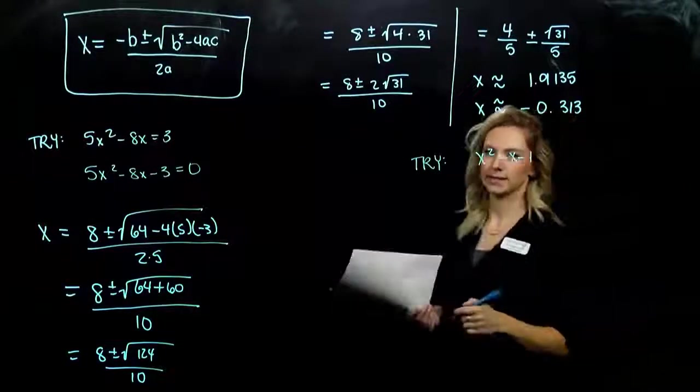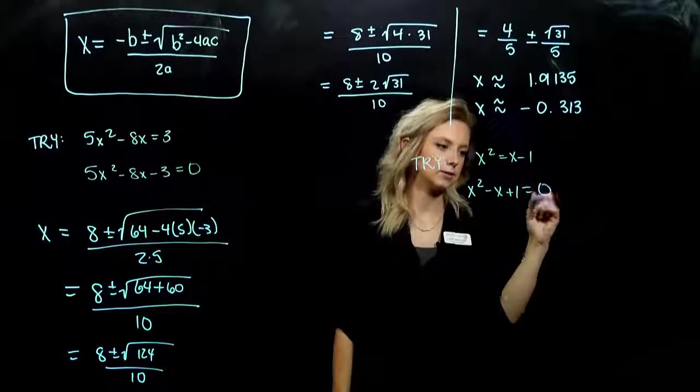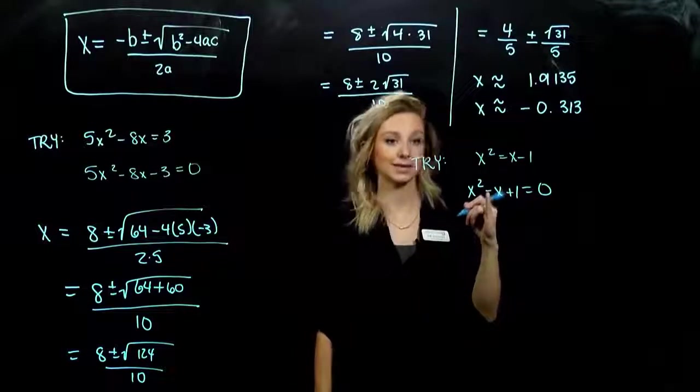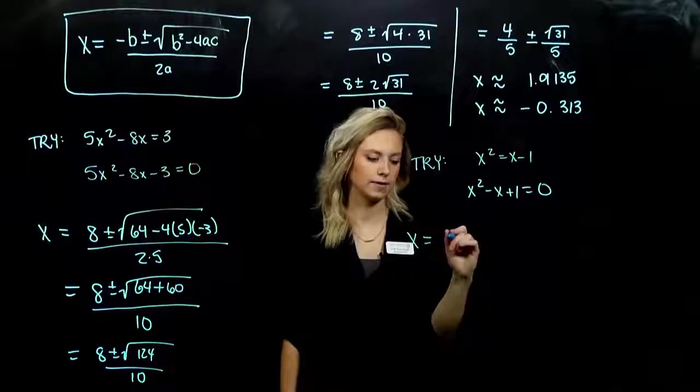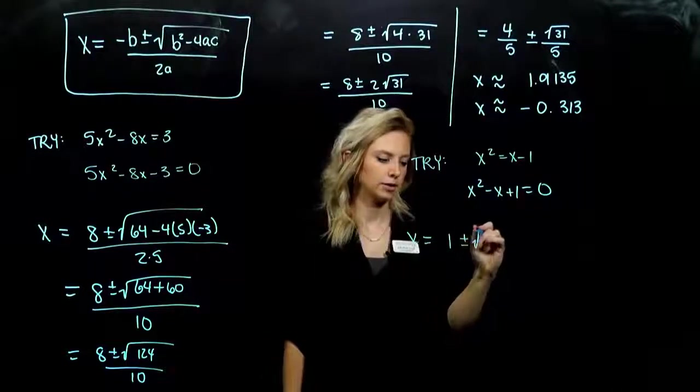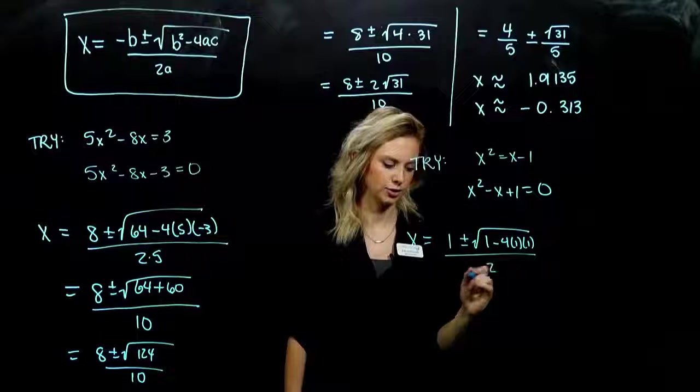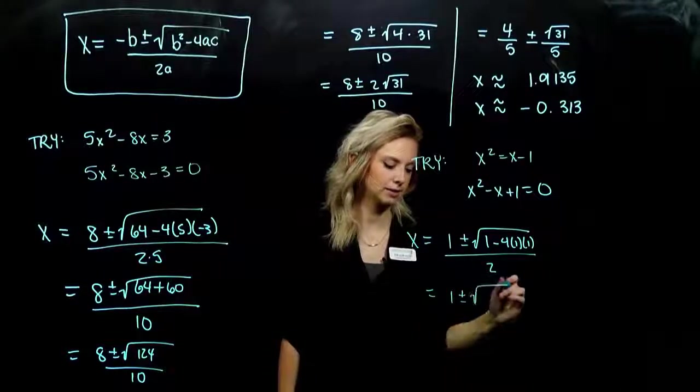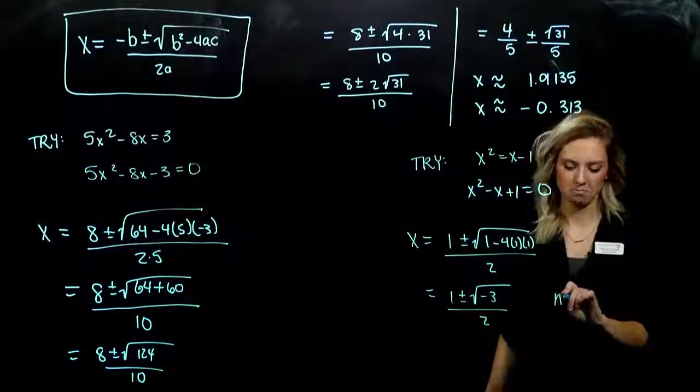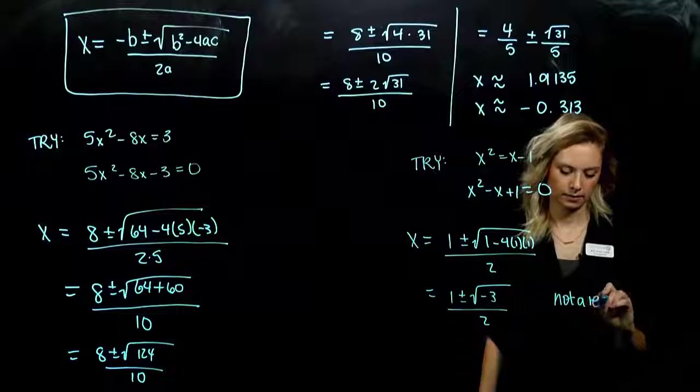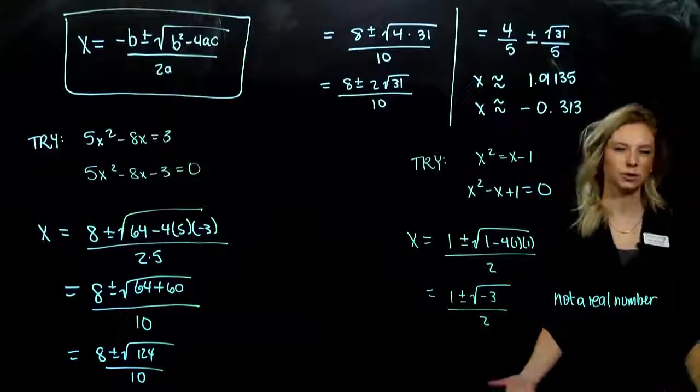And with this last example, what happened? So we need to move everything to one side. Have it set equal to 0. A is 1, B is negative 1, C is positive 1. So I've got x equals negative of a negative gives me a positive, plus or minus b squared minus 4ac all over 2. So I've got 1 plus or minus the square root of negative 3. So what happened in that case? Not a real number. Whenever we have a negative radicand, we're dealing with imaginaries. We don't know how to work with those yet.